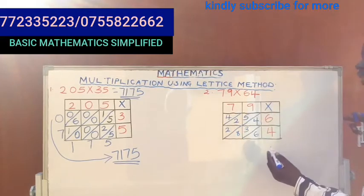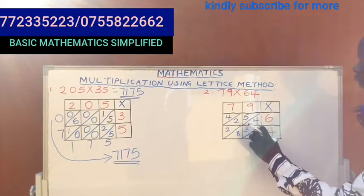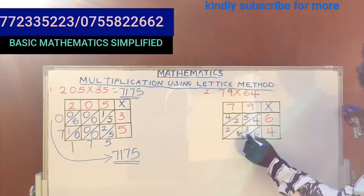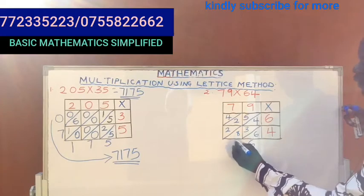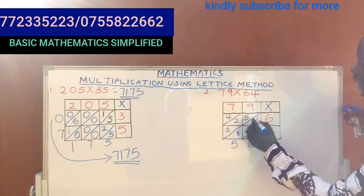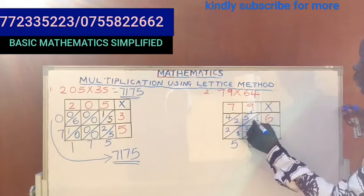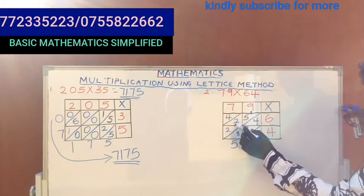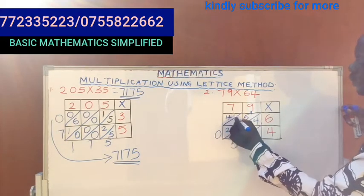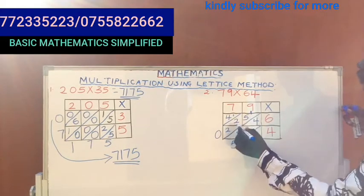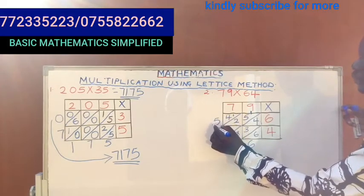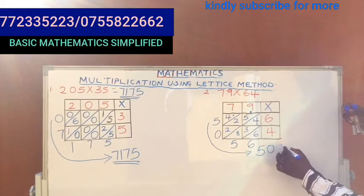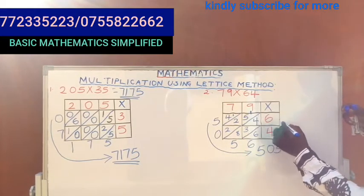Then after that you now follow the diagonal. You add them. This is 6. What is 4 plus 3? 7. 7 plus 8 is 15. You write 5, you don't write 15 here, you bring 1, you regroup 1 up here. So this is 1 plus 5 which is 6, 6 plus 2 which is 8, 8 plus 2 which is 10. You write 0, you regroup 1. So what is 1 plus 4? It is 5. So you write your answer from there. Your answer is 5, 0, 5, 6, meaning that 79 times 64 is 5056. That is as simple as that.